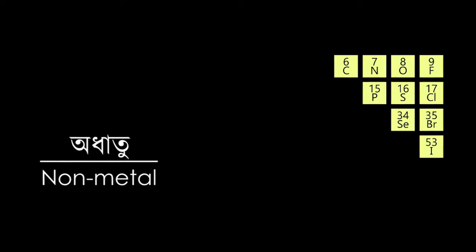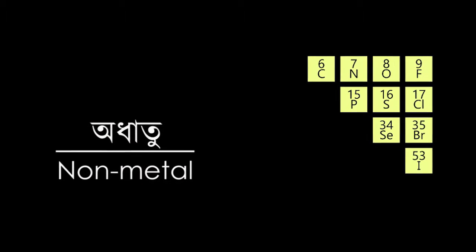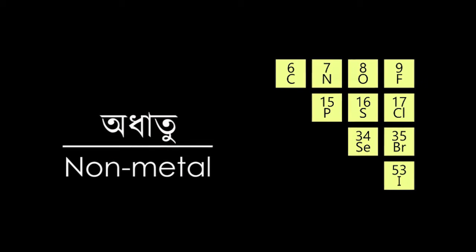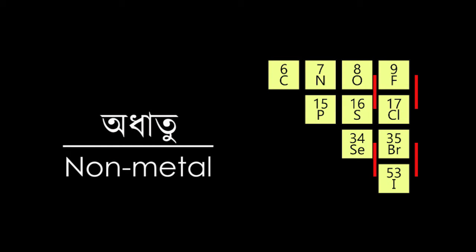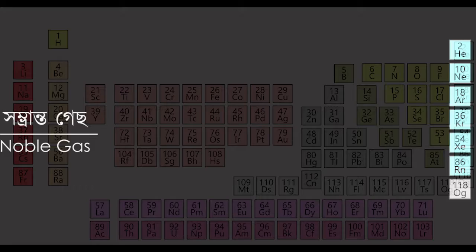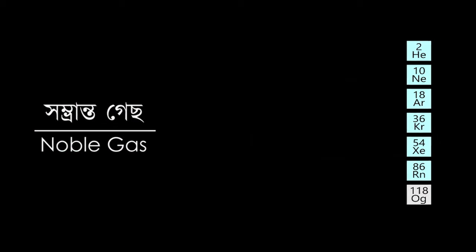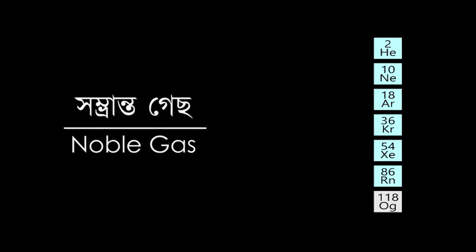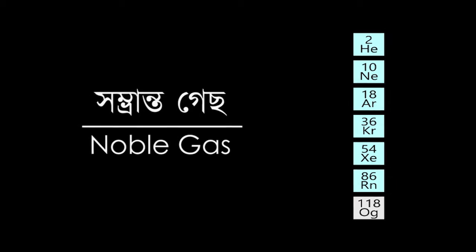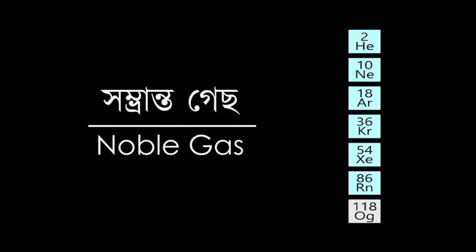The elements of group 14 to 17 are called non-metals, out of which group 17 elements are called halogens. Group 18 elements are called noble gases. These gases are less reactive because the electrons in their outermost shell are complete.